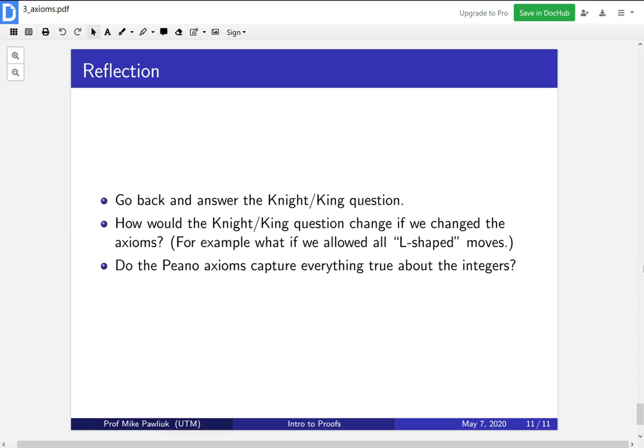Now let's take a moment to reflect. You should go back and answer the king-knight problem. So the question was, can the knight reach the king space? How would the knight-king question change if you changed the axioms? So if you changed the rules of the game? For example, what would happen if you allowed all L-shaped moves, even ones that go backwards? Finally, do the Peano axioms capture everything that's true about the integers? Is there anything missing? Thank you very much, and have a good day.